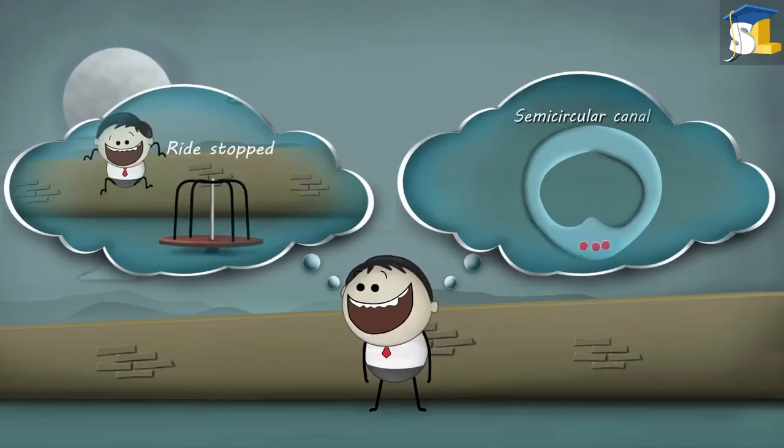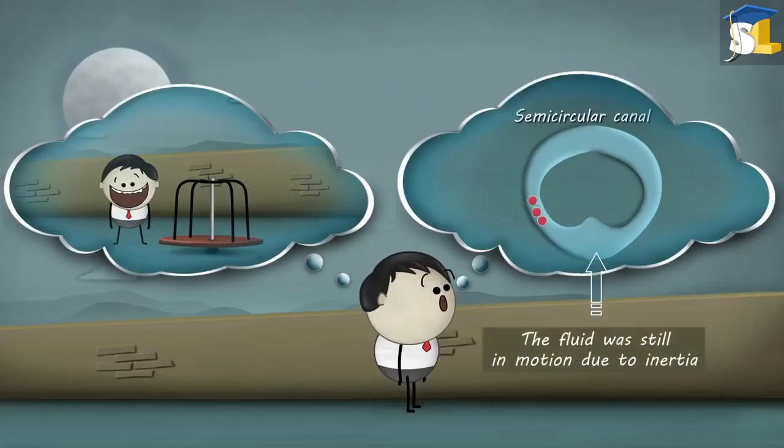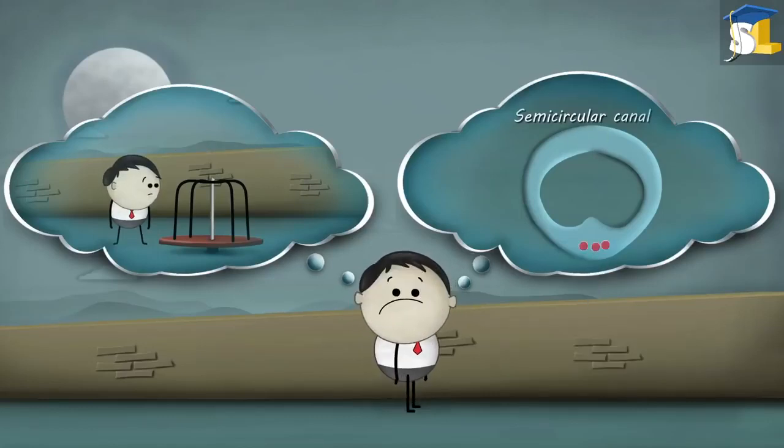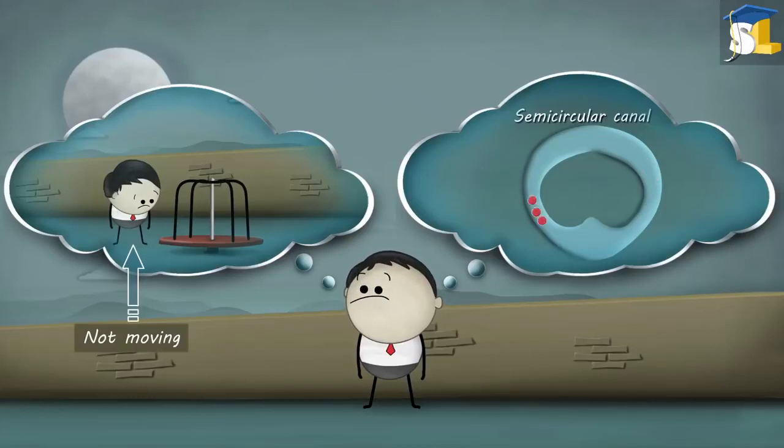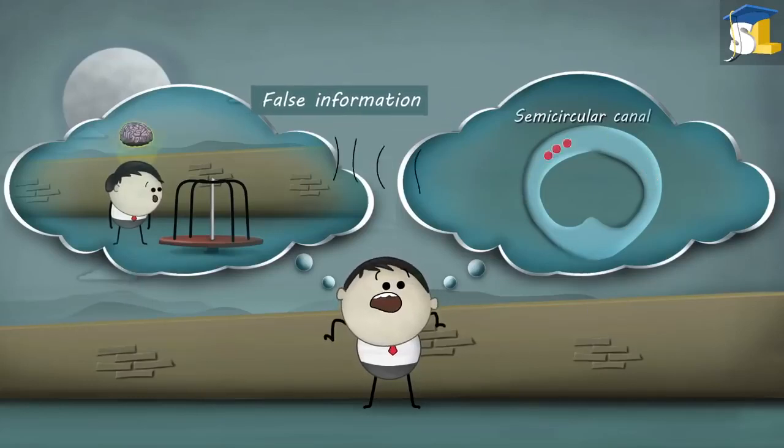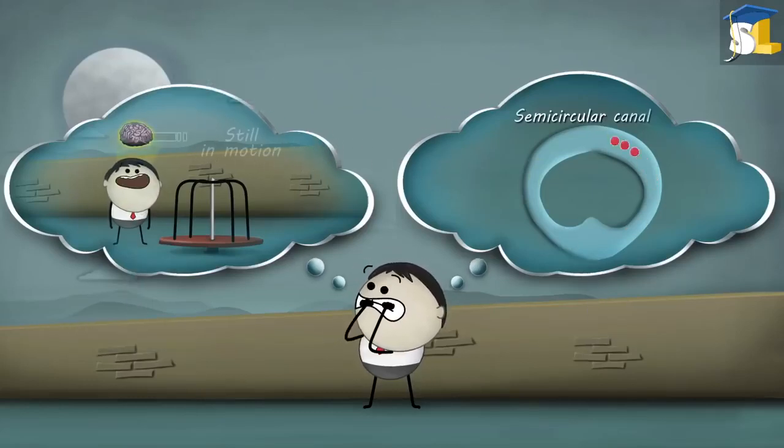However, when the ride stopped and you got down from the ride, the fluid was still in motion due to inertia. Hence, even though you were not moving, the moving fluid gave your brain false information telling you that you are still in motion.